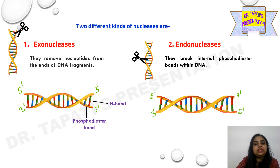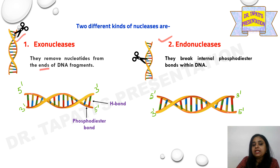There are two different kinds of nucleases: exonucleases and endonucleases. Exonucleases remove nucleotides from the ends of DNA fragments, whereas endonucleases break internal phosphodiester bonds within DNA.